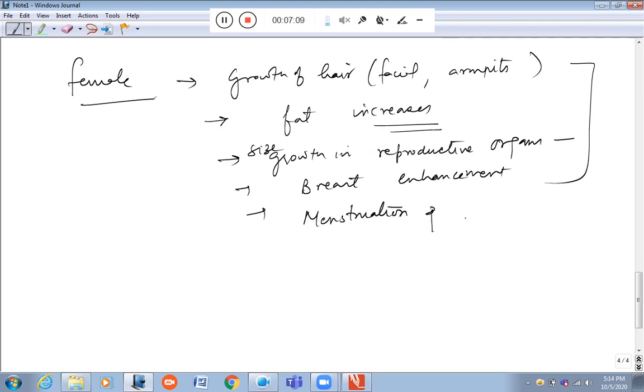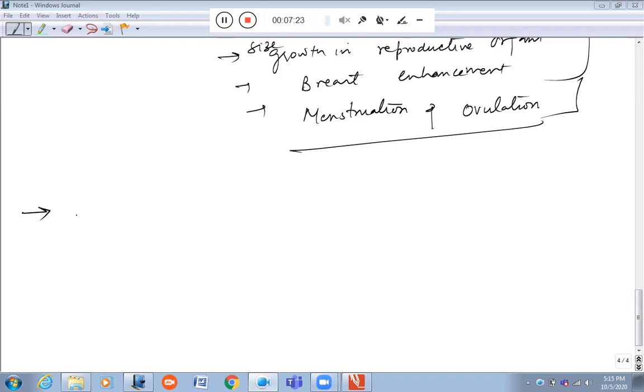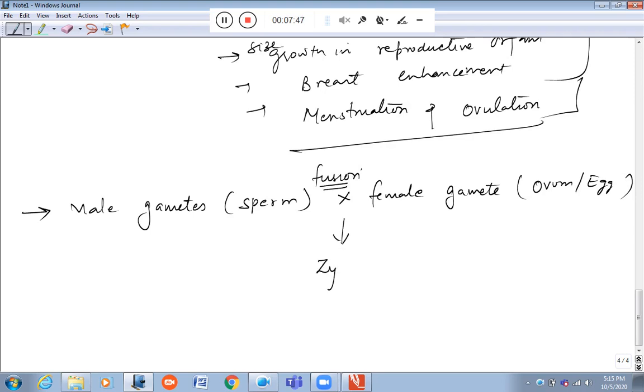We all know that male gametes are termed as sperm and female gametes as ovum or egg. Whenever they undergo the process of fusion, they lead to formation of zygote. The zygote undergoes cell division multiple times and forms an embryo, which then divides further and leads to fetus and then to a human being.